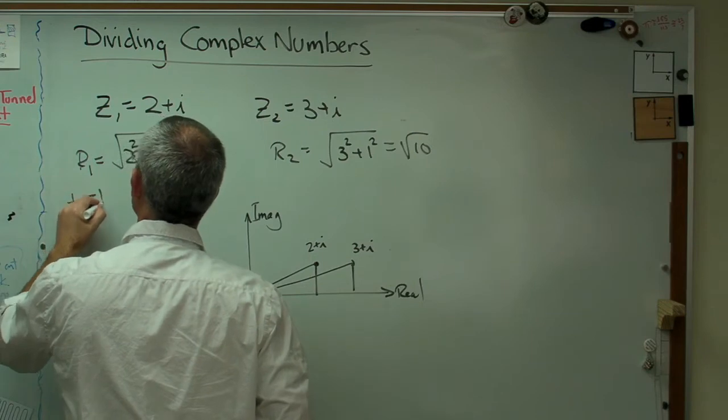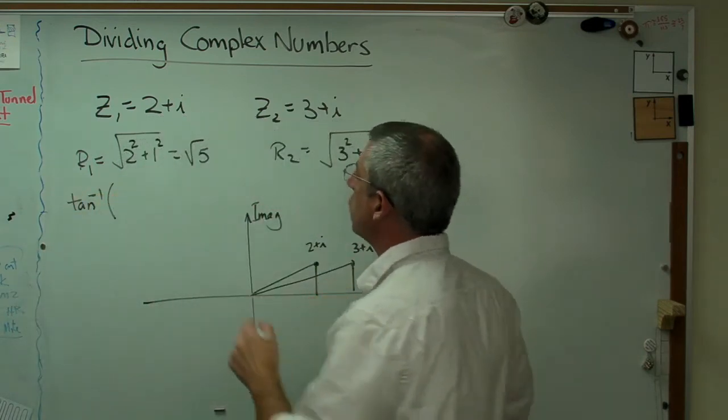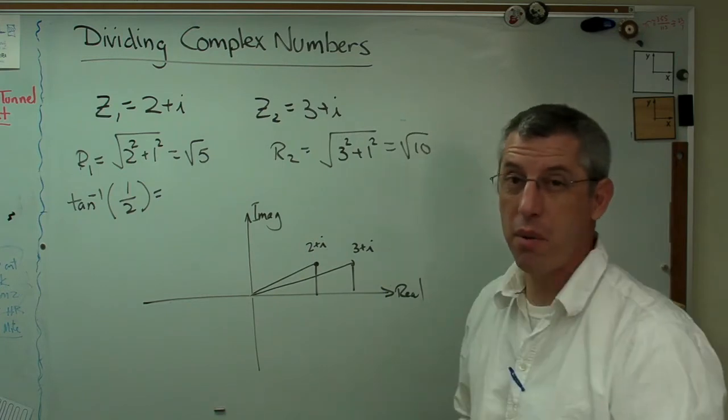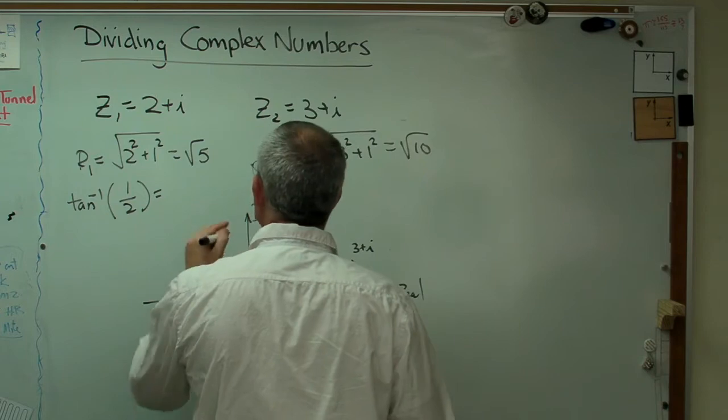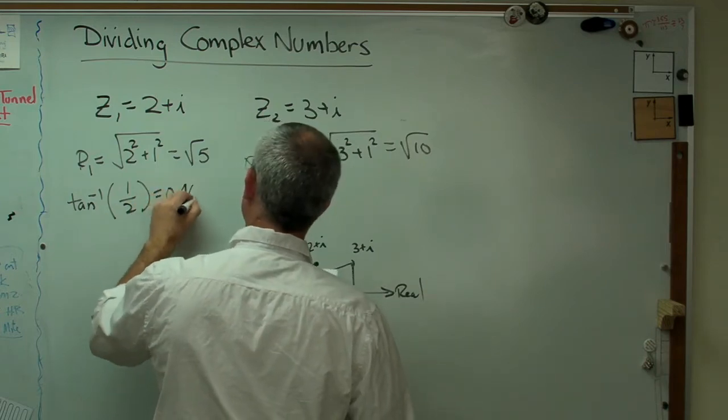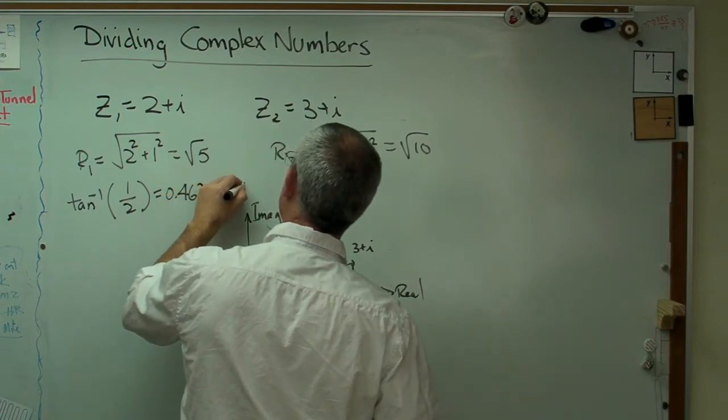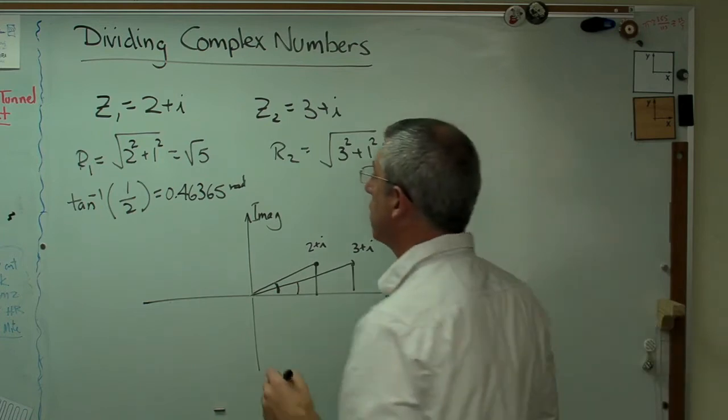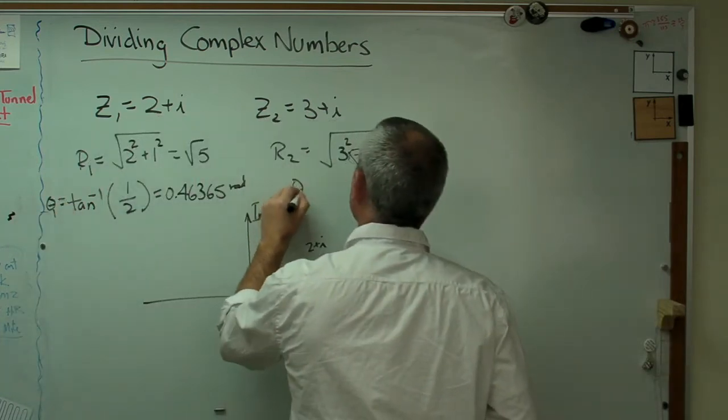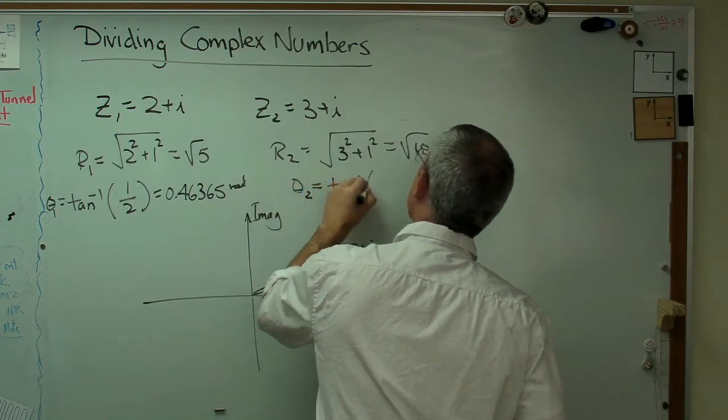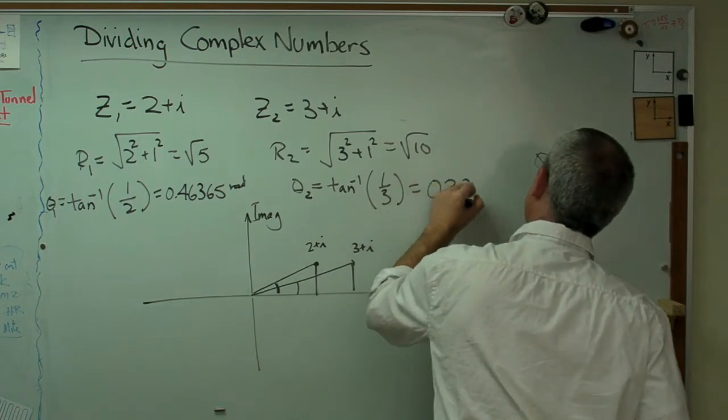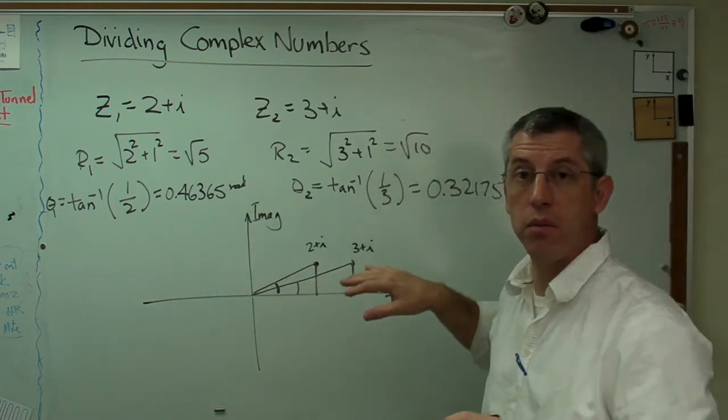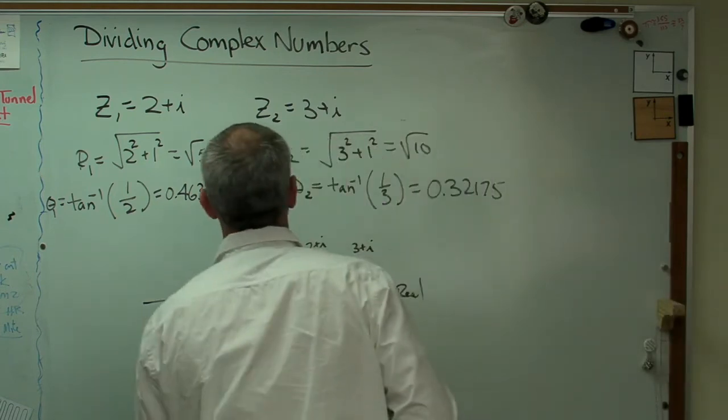Well, let's see, inverse tangent of 1 over 2 turns out to be—now I'm going to leave this in radians. You can write this out in degrees if you want, but if you want to work with them, you'd probably better leave them in radians. I'm going to make sure I get this number right: 0.46365, and that's in radians. That's theta 1. And theta 2 is the inverse tangent of 1 over 3, and that's 0.32175. So I've got both of these numbers written out now in polar coordinates. So I have a radius and an angle.